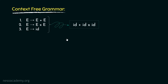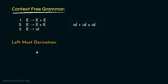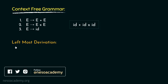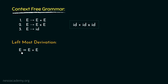Suppose from this grammar we want to derive the string ID plus ID into ID. Now there are mainly three types of derivation processes. The first one we are about to learn is leftmost derivation. In leftmost derivation, whenever expansion takes place, we will expand the leftmost non-terminal. Let me illustrate. We are to derive this string. Since the start symbol is E, let's choose the first rule: E derives E plus E. Now since it's leftmost derivation, we will choose the leftmost non-terminal — that is this E — for expansion.